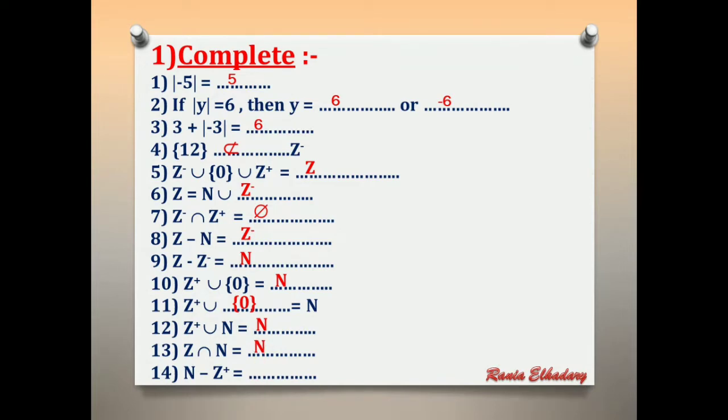Number 14: natural difference Z positive. If we subtract the positive numbers from natural, what is the remainder? The remainder is 0.